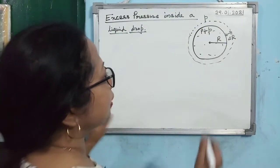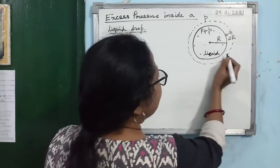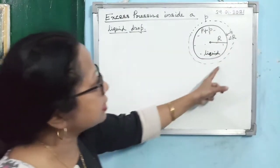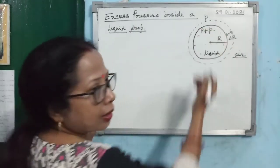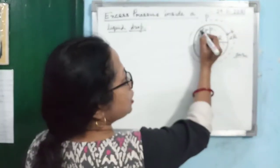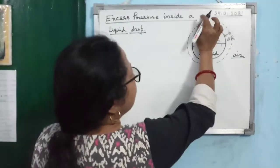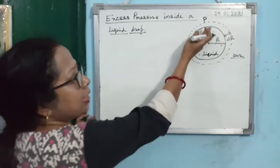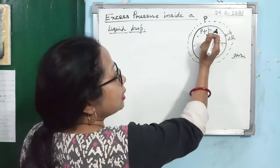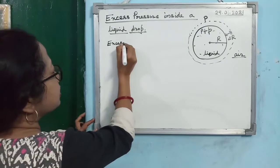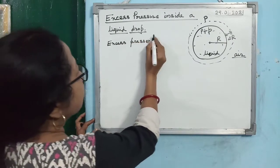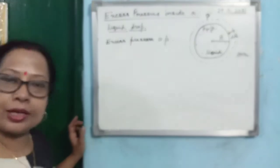For a liquid drop, inside the drop is spherical with radius R. Inside is liquid and outside is air. The surface is concave inward, so the excess pressure is on the concave side — inside the drop. If the pressure outside the liquid drop is P, then inside the liquid drop the pressure will be P plus small p, where small p is the excess pressure acting inside the liquid drop.